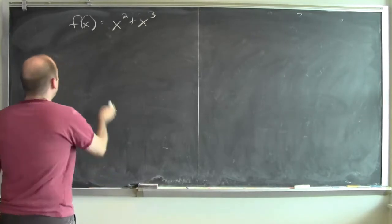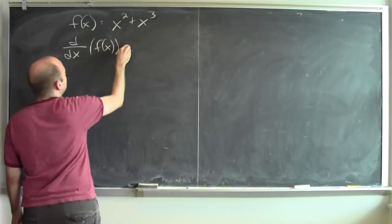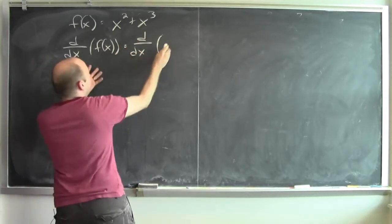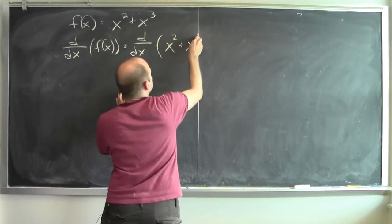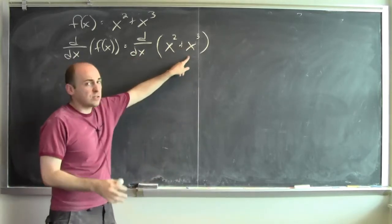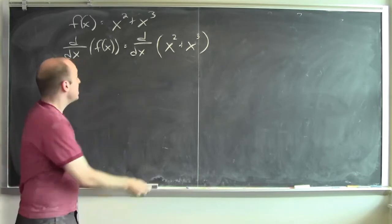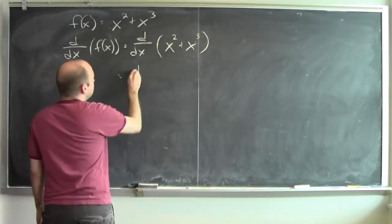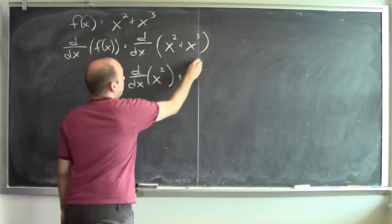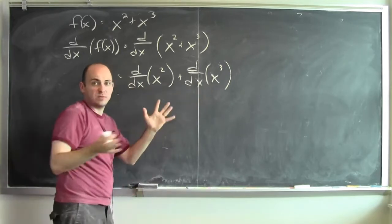I want to differentiate that. So the derivative of f of x — f of x is x squared plus x cubed — and provided x squared and x cubed are differentiable, the derivative of a sum is the sum of the derivatives. So this is the same as the derivative of x squared plus the derivative of x cubed, provided those derivatives exist.